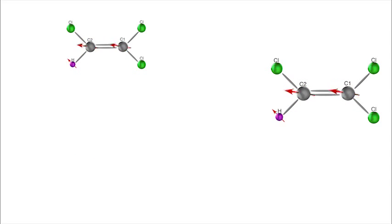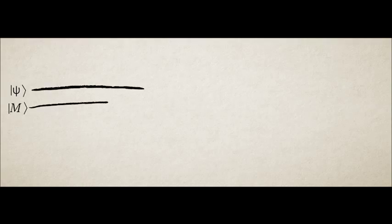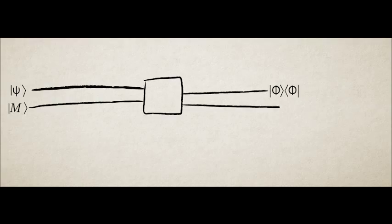Ideally, we would like to have a circuit element that could post-select with some probability. For example, after two systems interact, one gets post-selected in the state phi. Each time this post-selection fails, we discard the experiment and repeat until successful.